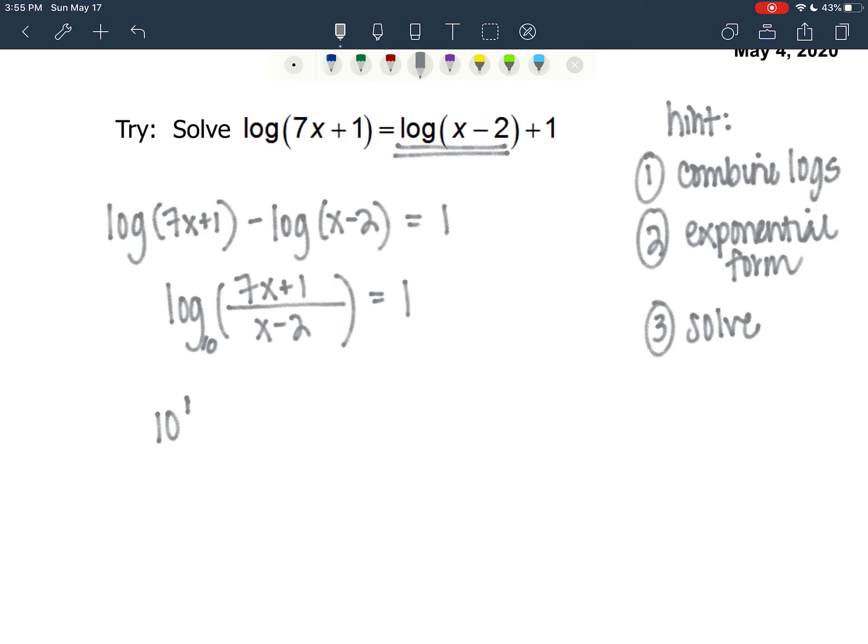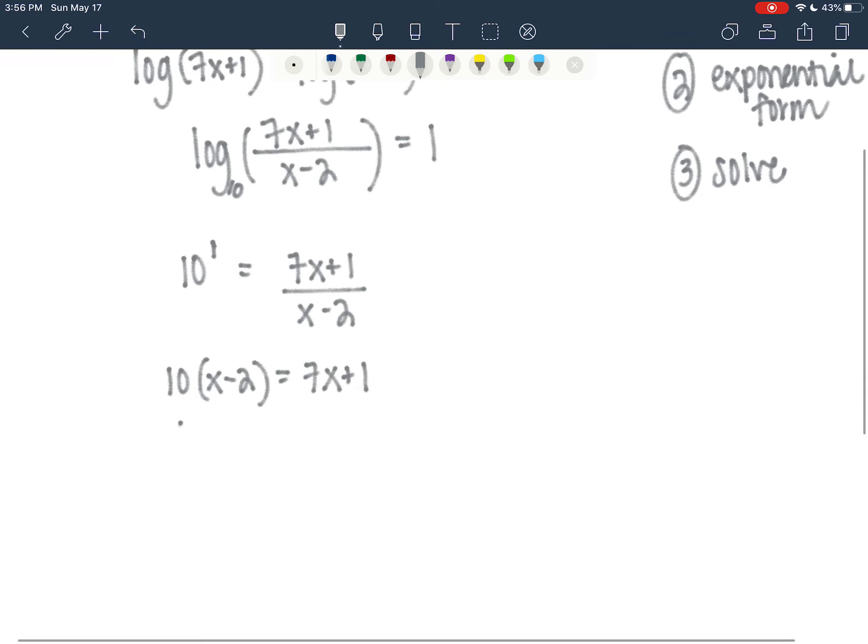I've got a base 10. 10 to the first power equals 7x plus 1 over x minus 2. I'm going to cross-multiply. 10 times x minus 2 equals 7x plus 1. 10x minus 20 equals 7x plus 1. 3x equals 21. x equals 7.